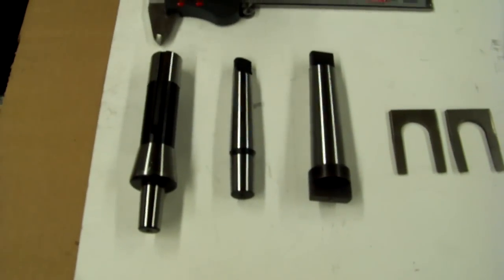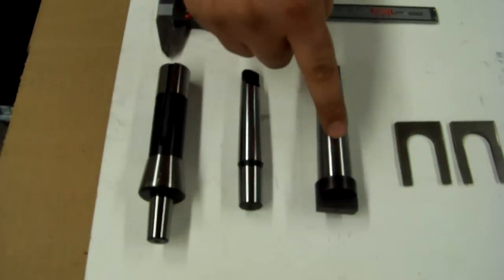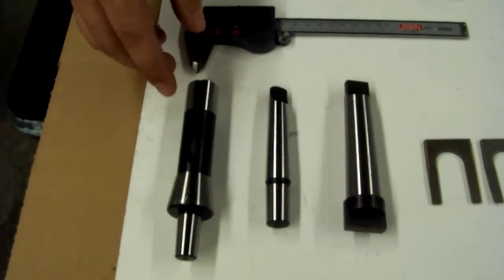On the table below you will see typical arbors that you might come across on your machine, such as the Jacobs taper, the Morse taper, or for a Bridgeport milling machine, an RA taper.